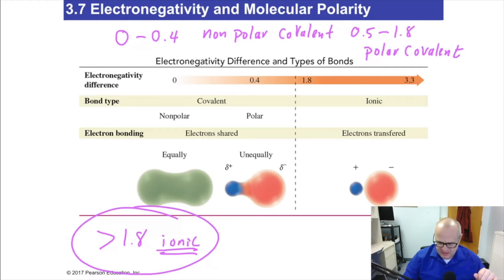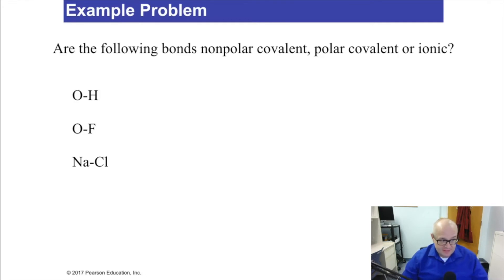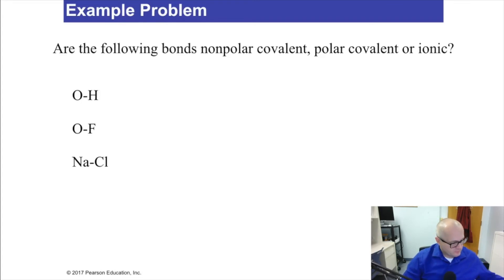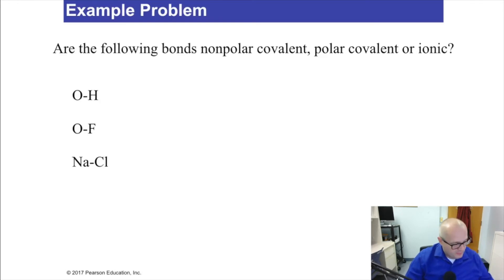Let's do some examples. I'm going to open your textbook and find the electronegativity table — every chemistry book has them. Probably romance novels don't have them, though they should.